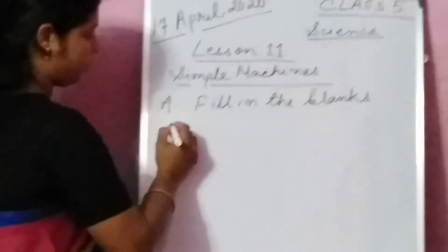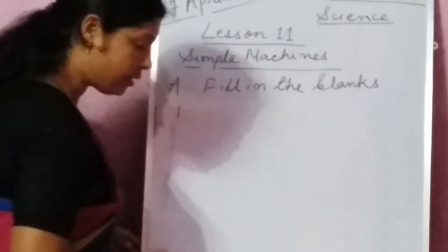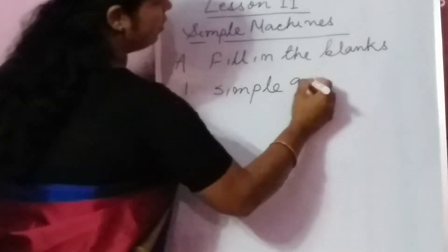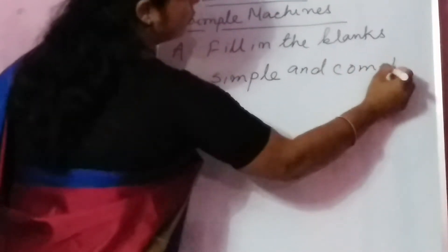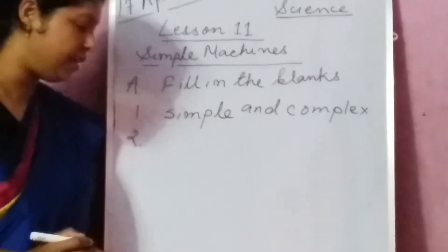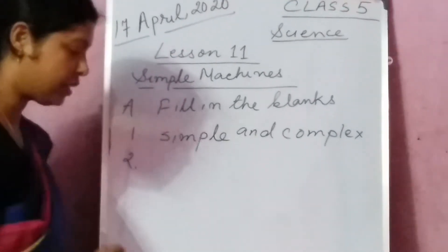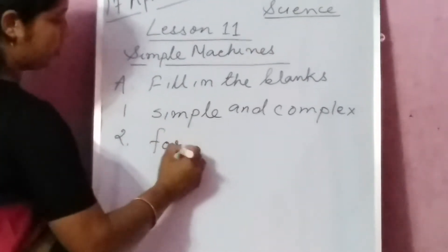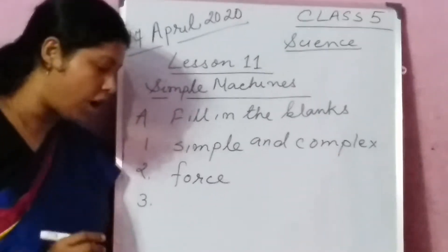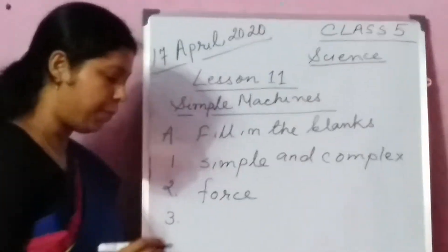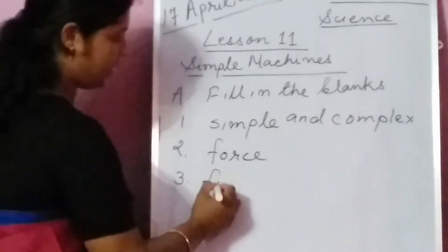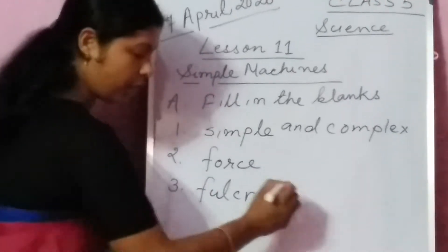Machines are of two types. Number one: simple and complex. Number two: a machine acts by reducing the force needed to displace an object. Number three: a lever is a rigid bar or rod that rests on a support called fulcrum or pivot. You will write fulcrum only because it is given in the book — that will be better for you.